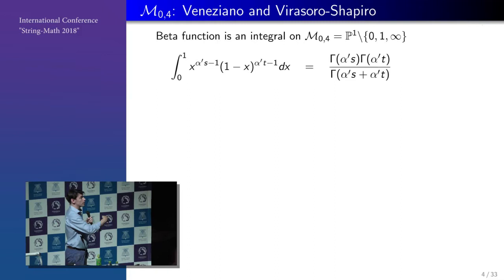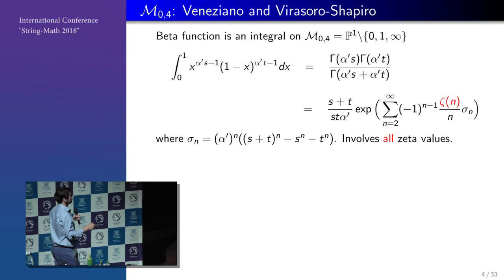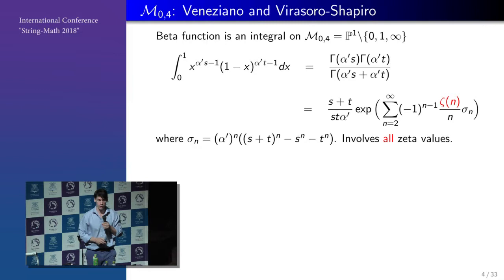If you expand in the parameter alpha prime, which is very classical, we find something rather interesting and well-known. First of all, we find that there are poles in S and T. So it's not a Taylor expansion — it's a Laurent expansion.